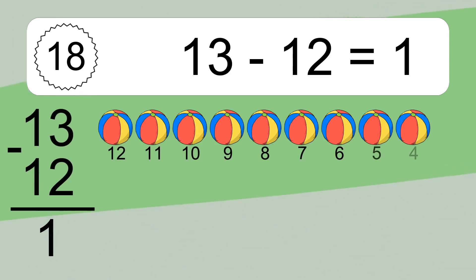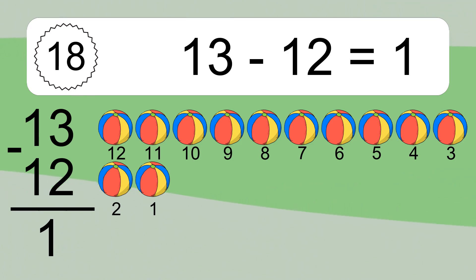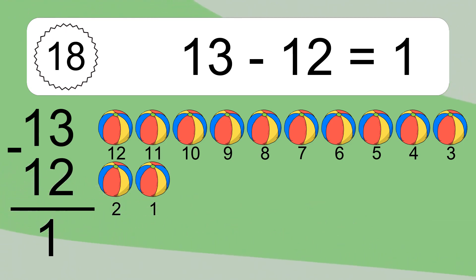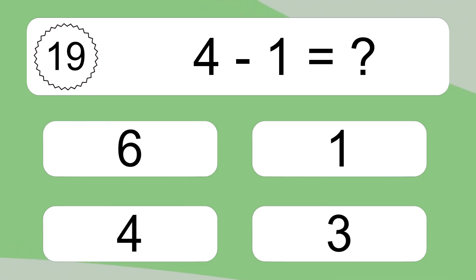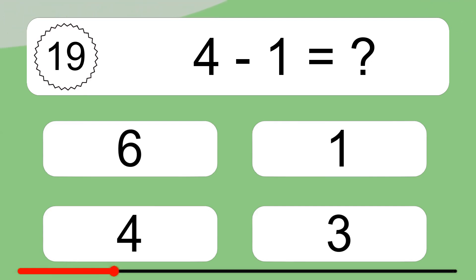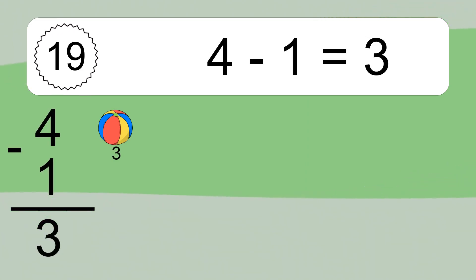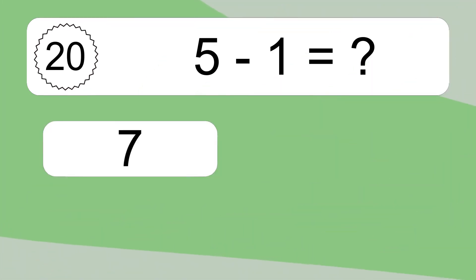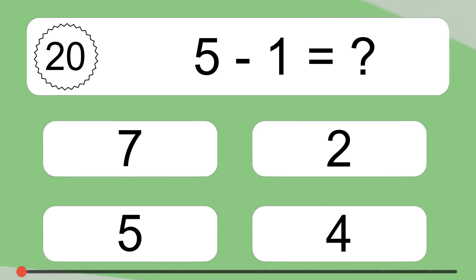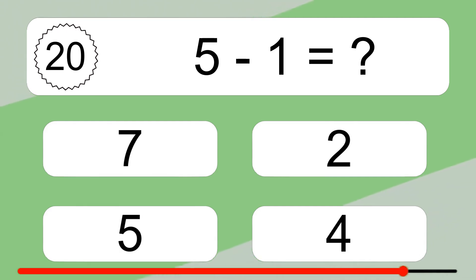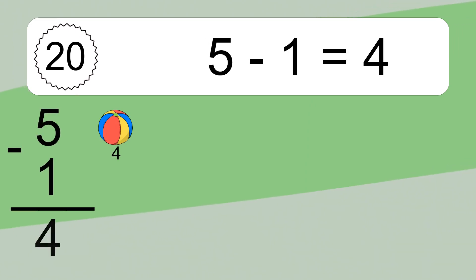13 minus 12 equals what? 13 minus 12 equals 1. Let's count it: 12, 11, 10, 9, 8, 7, 6, 5, 4, 3, 2, 1. 4 minus 1 equals what? 4 minus 1 equals 3. Let's count it: 3. 5 minus 1 equals what? 5 minus 1 equals 4. Let's count it: 4.